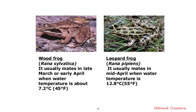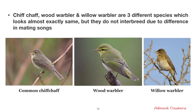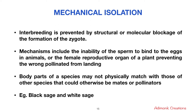The third type is ethological or behavioral isolation, where species engage in distinct courtship and mating rituals. Differences in courtship behavior prevent mating between individuals of different species. A good example is the chiffchaff, wood warbler, and willow warbler — three different species that look almost exactly the same but do not interbreed due to differences in their mating songs and singing patterns.